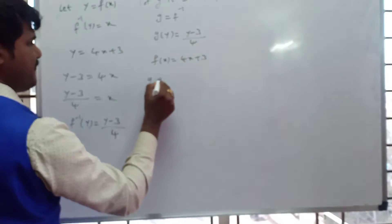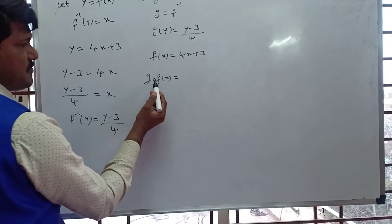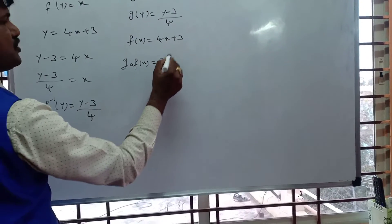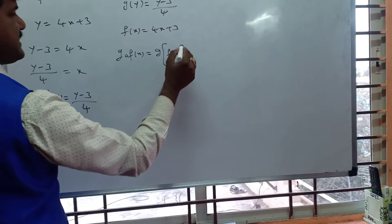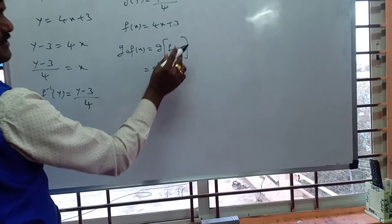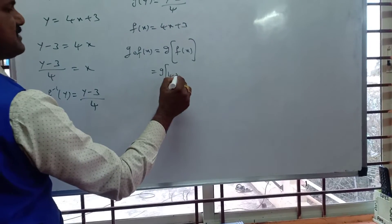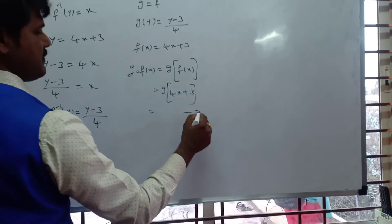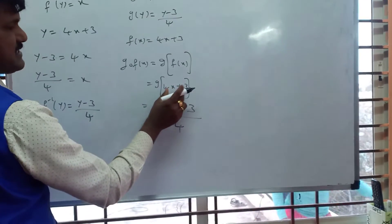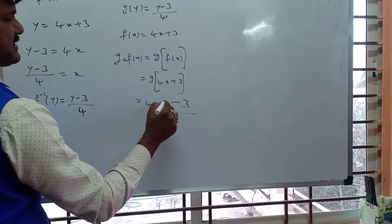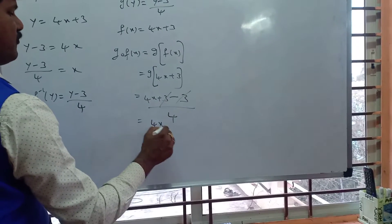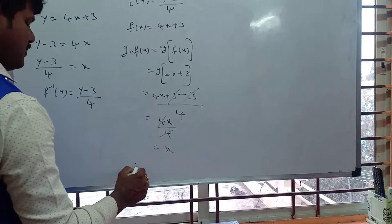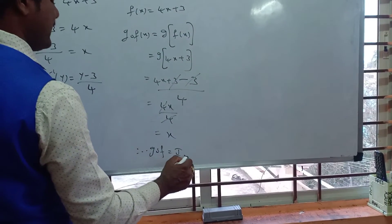Now consider g∘f(x). Removing the bracket: g(f(x)) = g(4x + 3). Using g(y) = (y − 3)/4, substitute y = 4x + 3: we get (4x + 3 − 3)/4 = 4x/4 = x. Therefore, g∘f = Iₓ (identity on X).